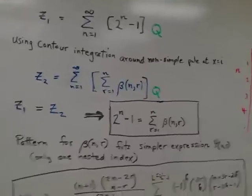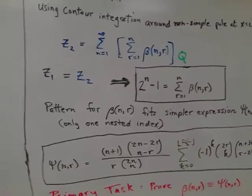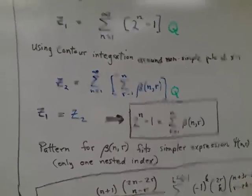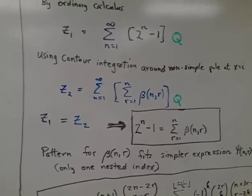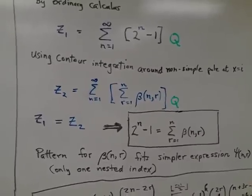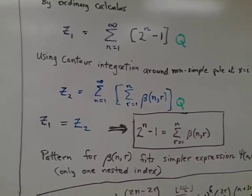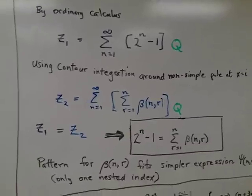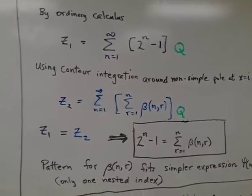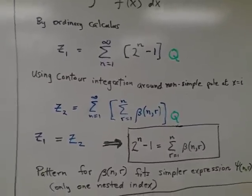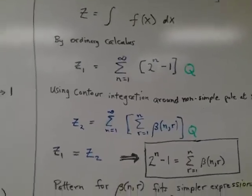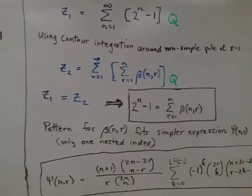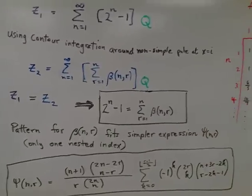Now, since these two are equal to each other and they are both infinite sums of a power series summation, they have to be equal term by term. So we can divide out the common factor Q and look at just one term, a generic term n, and we come to the conclusion that 2^n - 1 is equal to the sum over beta.